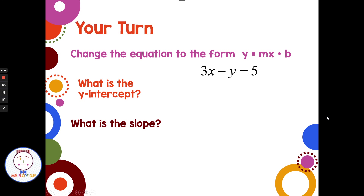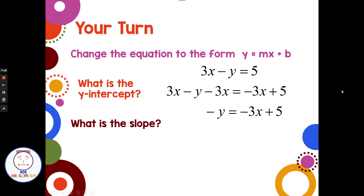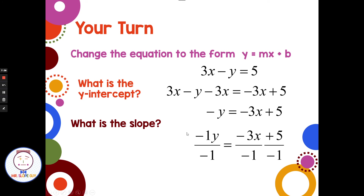Let's try a harder one. Take 3x minus y equals 5 and rearrange into slope-intercept form, then identify the slope and y-intercept. Pause the video here. Welcome back. I start by subtracting 3x from each side. The x's cancel on the left, leaving negative y. On the right, putting negative 3x right after the equal sign gives negative y equals negative 3x plus 5. To get rid of the negative on y — which is like a negative 1 — I divide through by negative 1, which flips all the signs, giving y equals 3x minus 5. The y-intercept is negative 5 and the slope is 3.